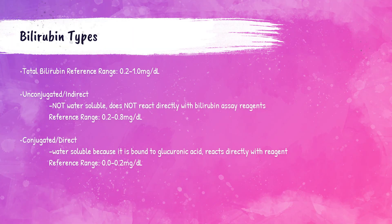The reference range for total bilirubin for a normal patient is 0.2 to 1.0 milligrams per deciliter. Conjugated or direct bilirubin levels can also be measured because they are water-soluble and react directly with the bilirubin assay reagent. The normal reference range for conjugated or direct bilirubin is 0 to 0.2 milligrams per deciliter. Unconjugated or indirect bilirubin does not react directly with the assay reagent because it is not water-soluble, so the indirect bilirubin level is calculated — similar to how indirect LDL cholesterol is calculated from a formula.